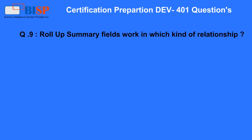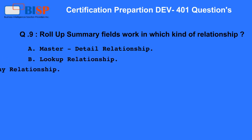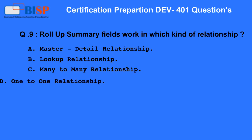Question 9. Roll-up summary fields work in which kind of relationship? A. Master-detail relationship. B. Lookup relationship. C. Many-to-many relationship. D. One-to-one relationship.